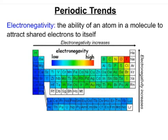Today we're going to talk about periodic trends. That's just a fancy way of saying that there are some qualities in the atoms on the periodic table that follow certain patterns. We're going to look at three of them in particular: electronegativity, ionization energy, and atomic radius of atoms.